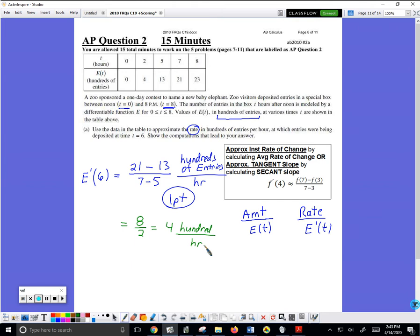Which makes sense. There were 1300 entries at hour five. If we increase the number of entries by 400 per hour, we'll end up with 2100 two hours later. That's what this is telling you. That's why we have approximated the rate at which e is changing. It's worth one point.